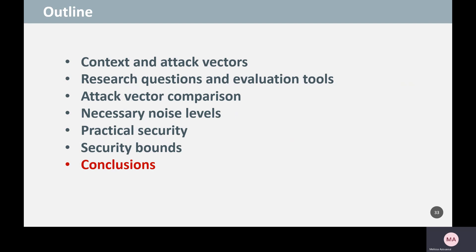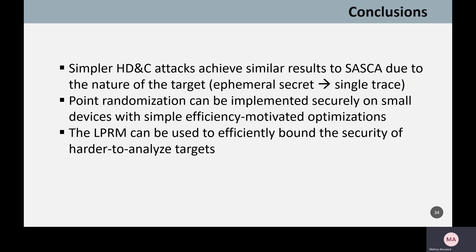To conclude: in the case of point randomization, belief propagation attacks achieve similar results to divide-and-conquer attacks for very low SNRs, mainly due to the nature of the target—since lambda is a random ephemeral value observable only through a single trace. Through the different kinds of analysis performed, we have shown that point randomization can be implemented securely on small devices, but only if adequate optimizations and side-channel attack considerations are taken into account. We also show that the LRPM can quite accurately and very efficiently bound the security of evaluated implementations, as confirmed by comparing LRPM results with concrete attack results.